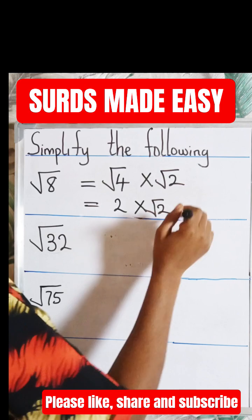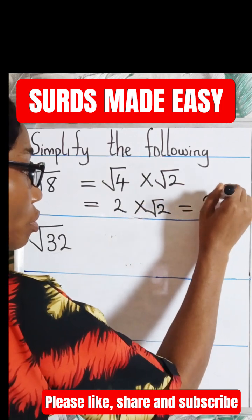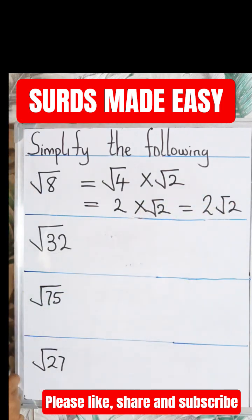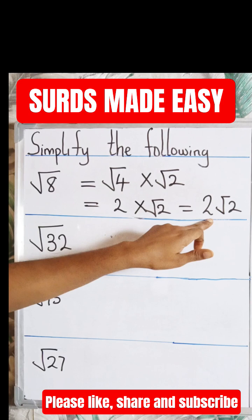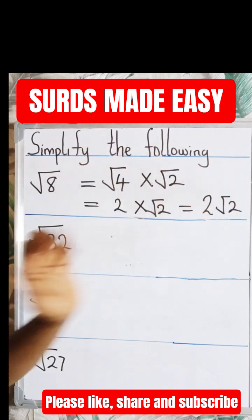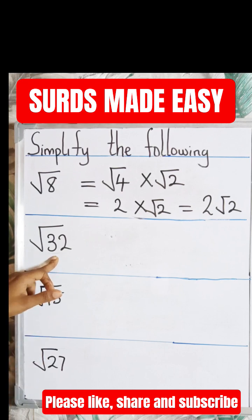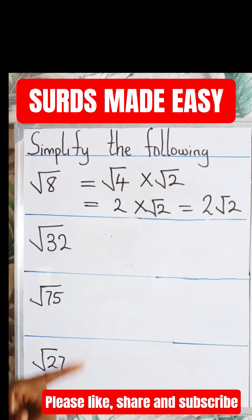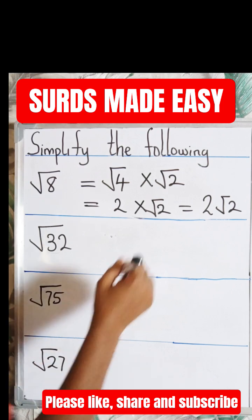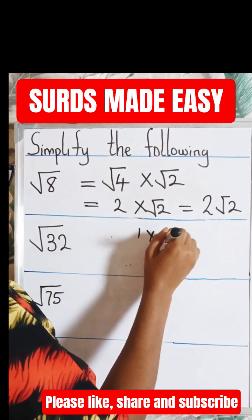So this is equal to 2 root 2. So root 8 equals 2 root 2. We are done with that. Let's look at the second one. We are going to do the same thing. We look for the factors of 32 such that one of it has to be a perfect square.